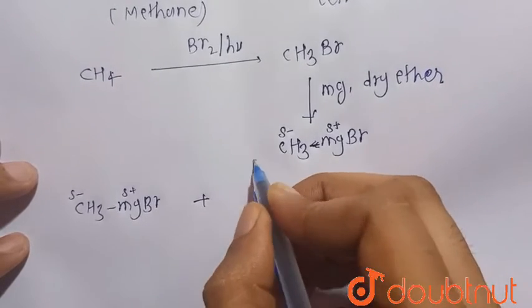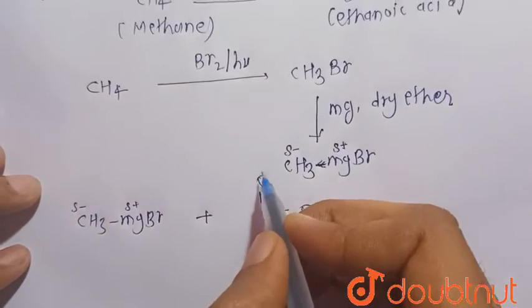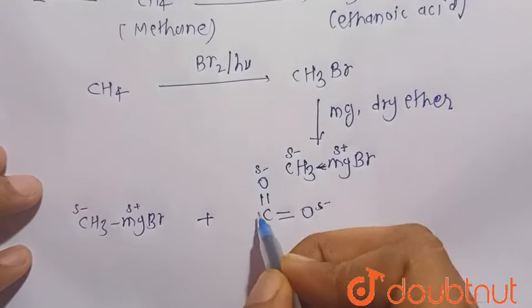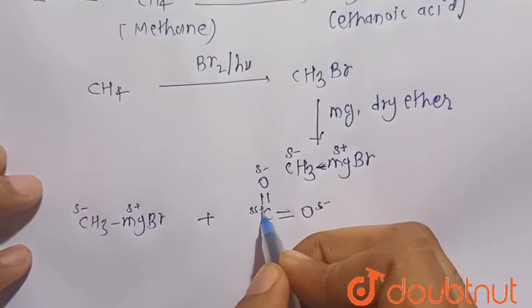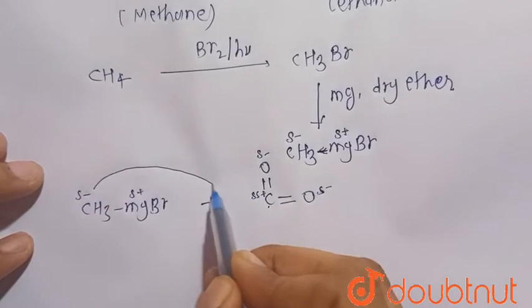So we know that oxygen is more electronegative than carbon, so it attends delta negative, this is also delta negative, and it attends delta positive. That is, it becomes electron deficient and this is electron rich, so there will be the nucleophilic addition reaction.